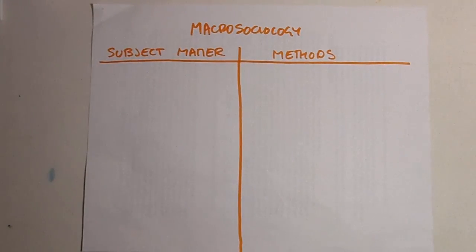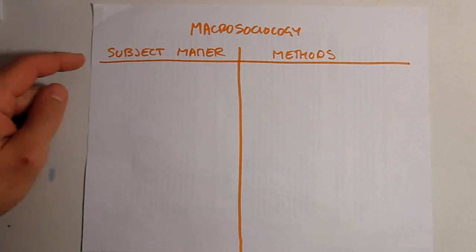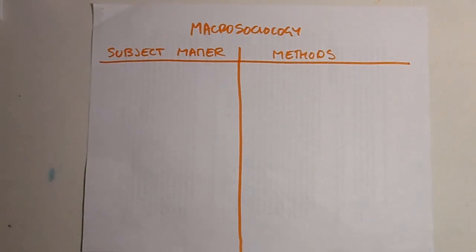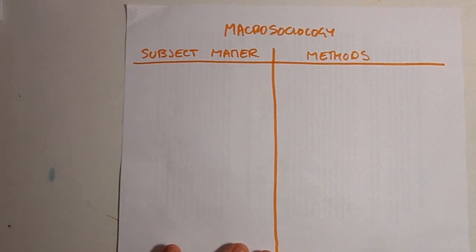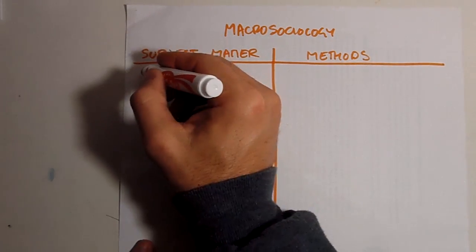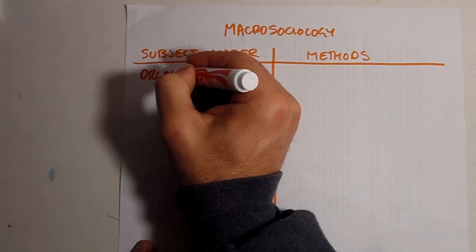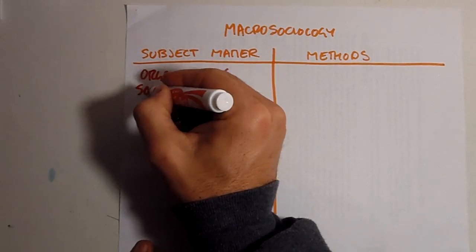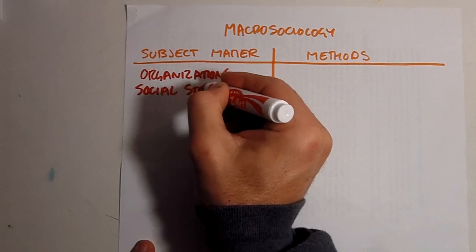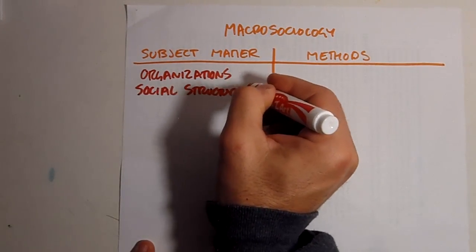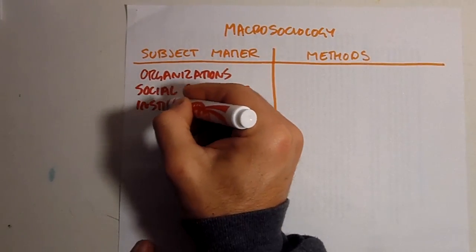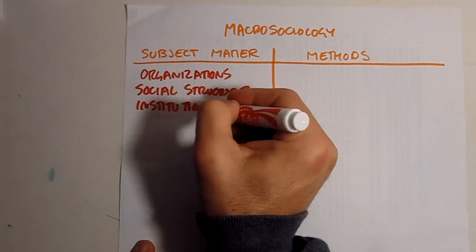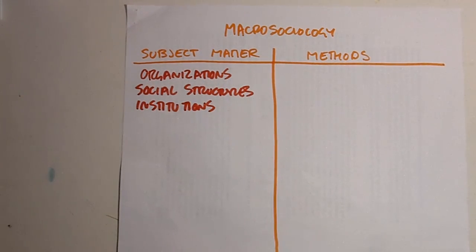Most definitions for macro-sociology will be based in the subject matter. The definition you'll usually see for macro-sociology focuses on the study of organizations, social structures, and institutions. Macro-sociology is the study of these things.